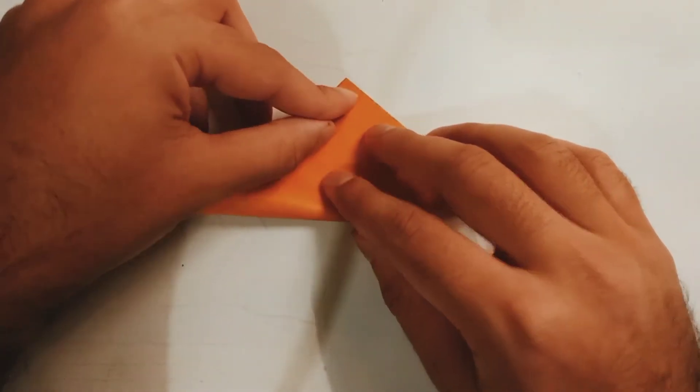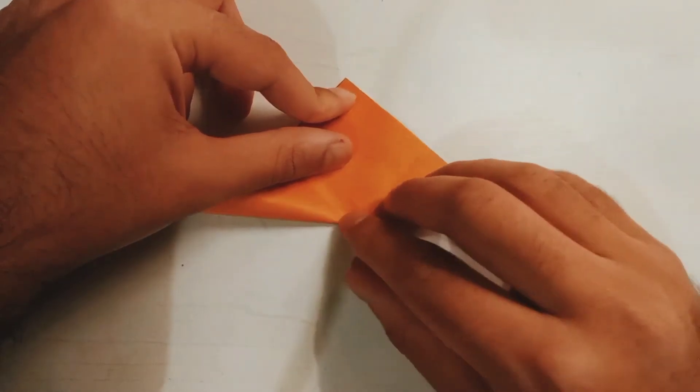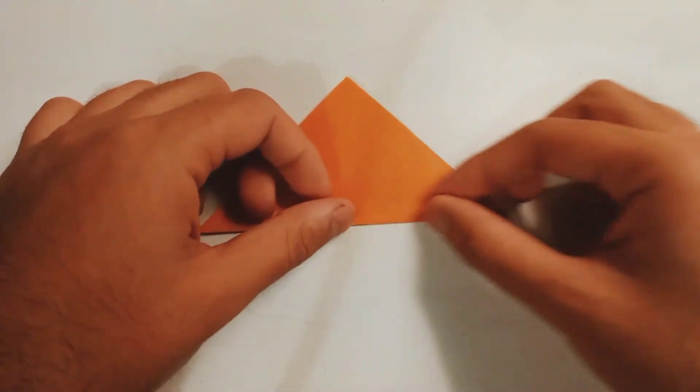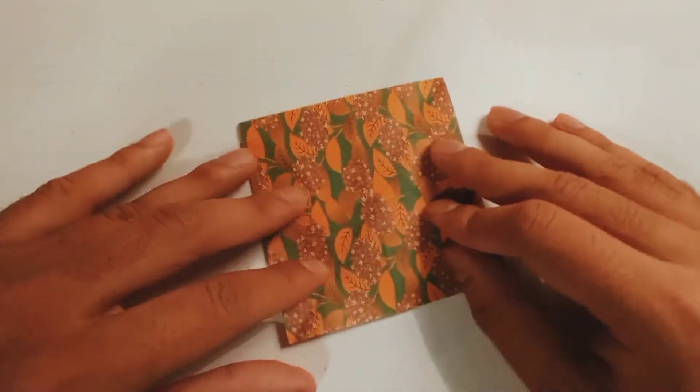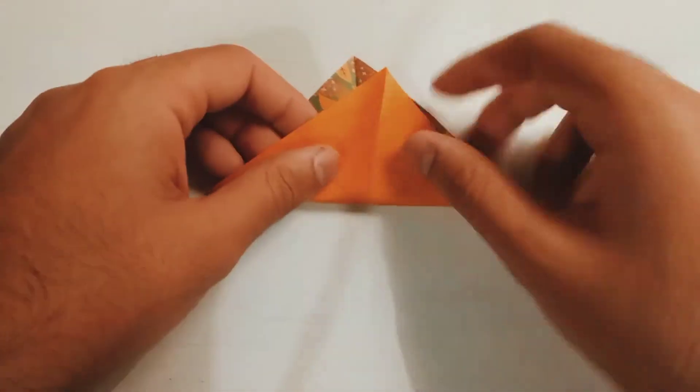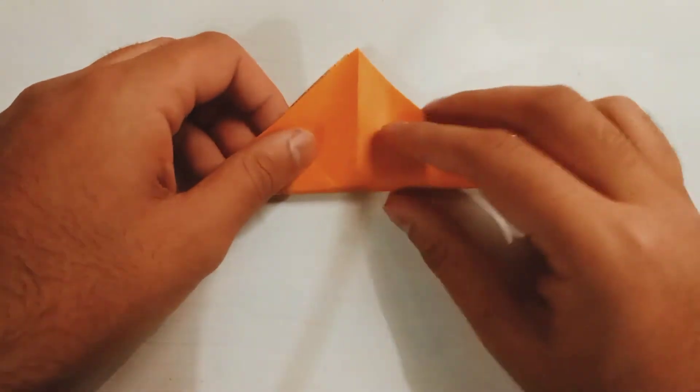This is part one where we are making the origami grain base. Now open it up and fold it to this side.